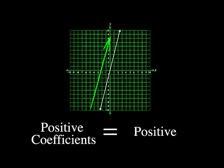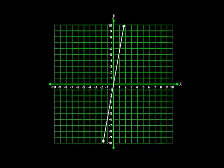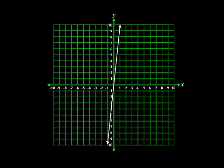I think that if the coefficient of x continues to increase, the line will become steeper and steeper, but the slope will remain positive. So now I know that if the slope is positive, the line will go up from left to right.